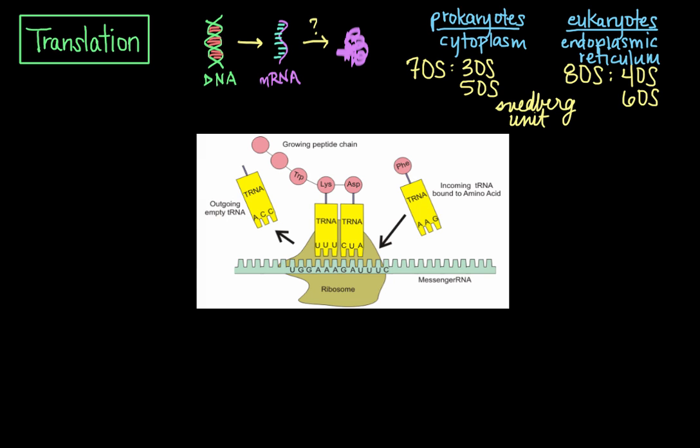Translation occurs in three distinct steps, the first of which is initiation. Initiation of translation involves the assembly of the components of the entire translation system, which are the small and large ribosomal subunits. It also includes the messenger RNA to be translated, a tRNA with an aminoacyl group or amino acid attached, GTP as the major source of energy, as well as initiation factors, or IFs, which help the assembly of this whole initiation complex.